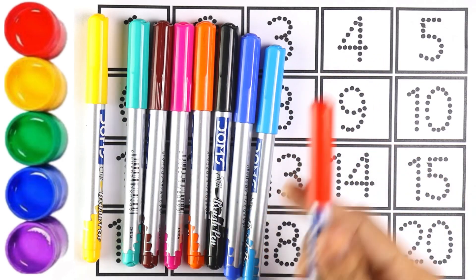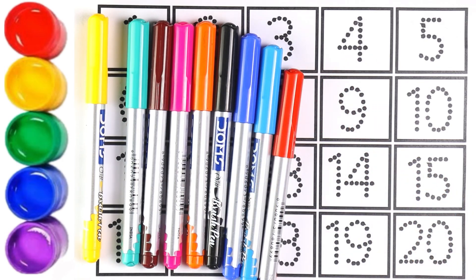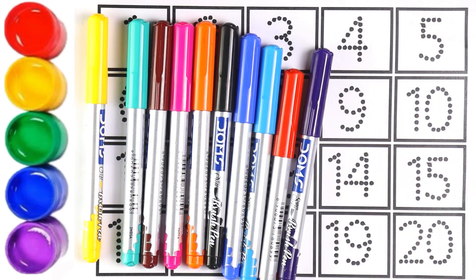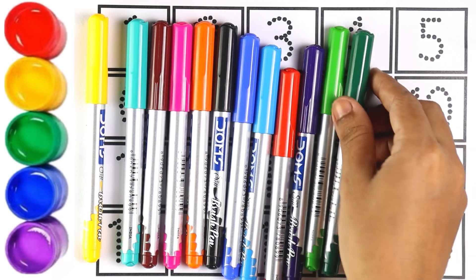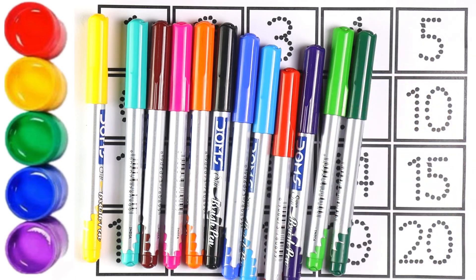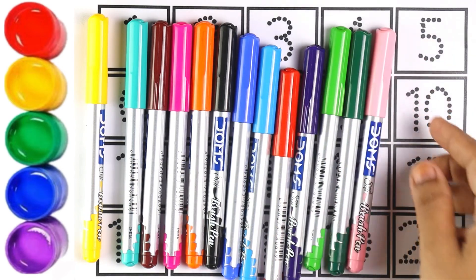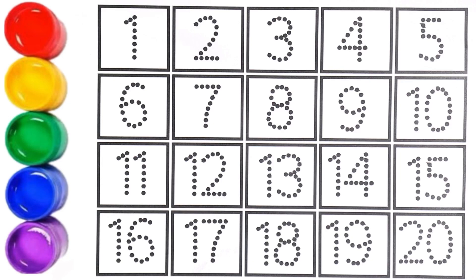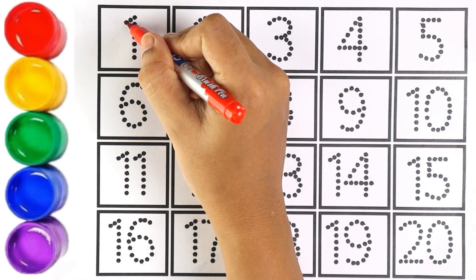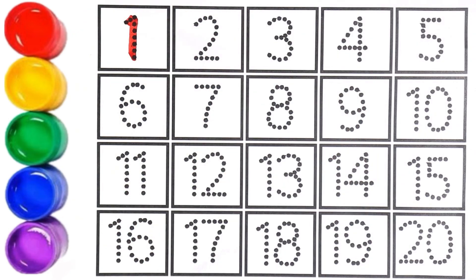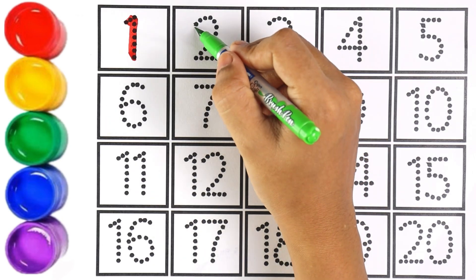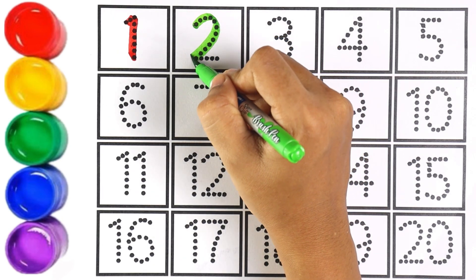Red color, purple color, light green color, green color, and light pink color. Now let's start writing numbers! Red color — number one. Light green color — number two.